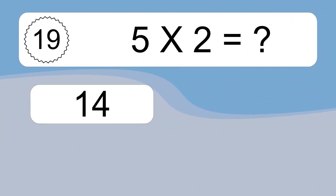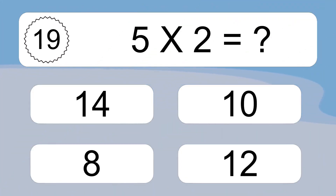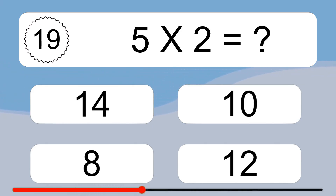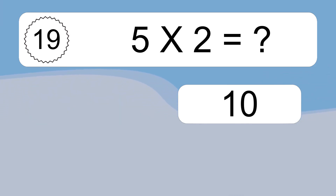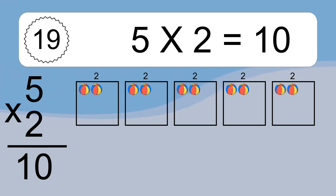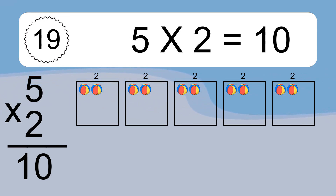Five times two equals what? Five times two equals 10. We have five boxes, and each box has two colorful balls inside. If you count all the balls in all the boxes together, you will have five times two balls. This equals 10 balls.